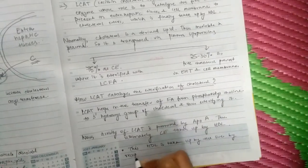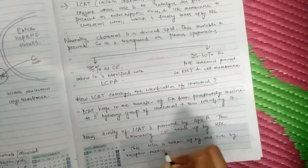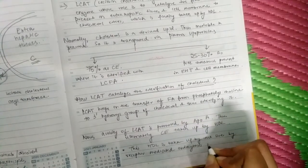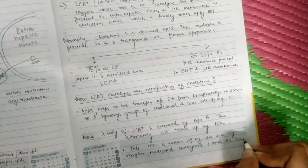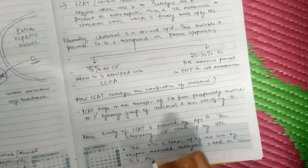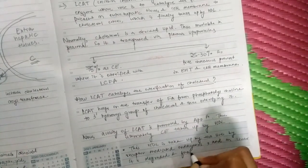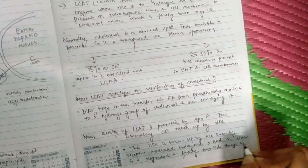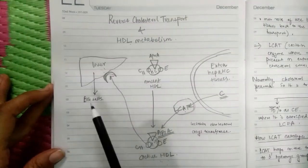This HDL is taken up by the liver by receptor-mediated endocytosis. And in the liver it is degraded and finally excreted through kidneys.